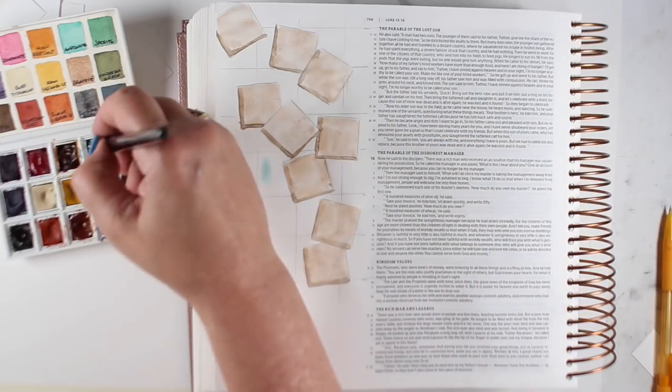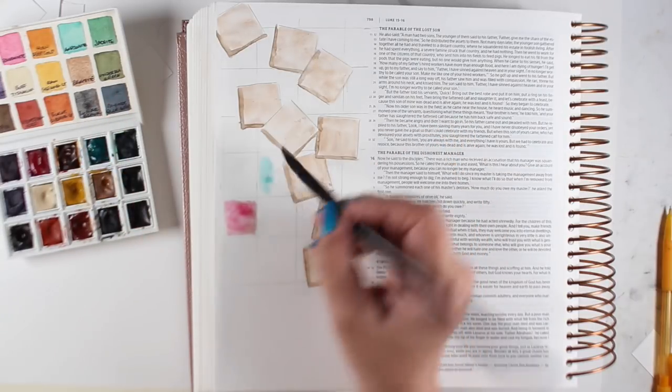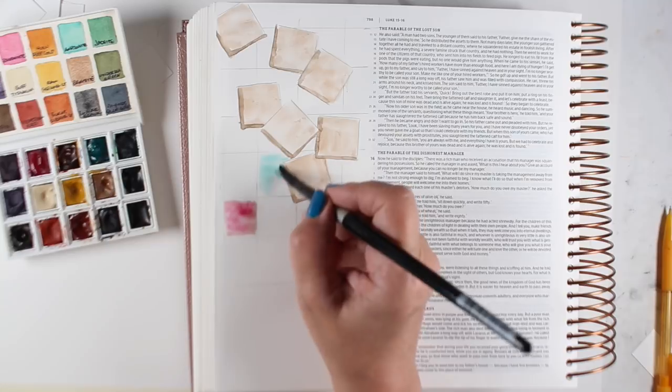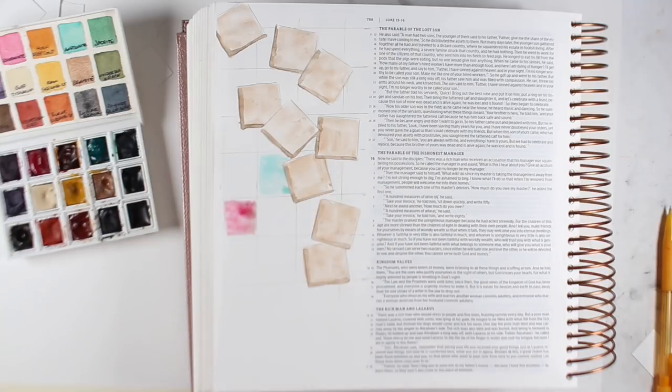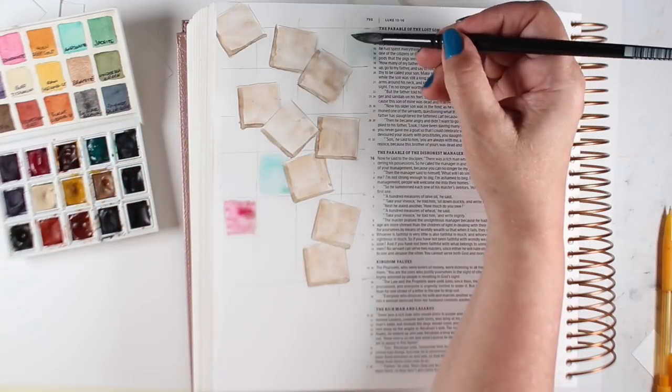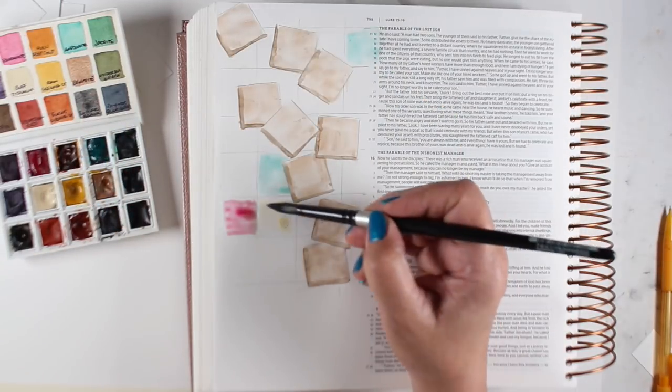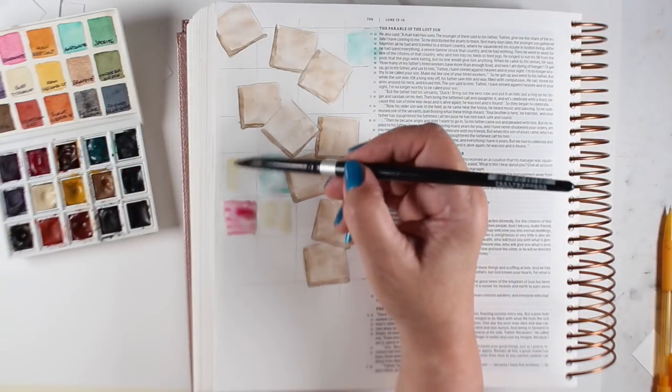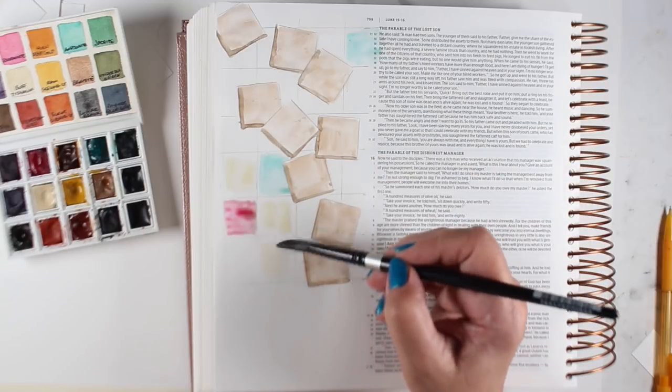And the scrabble boards have usually a couple different squares that have different points on them. And there's some that are pink and blue or pink and teal, different kinds of colors. You can, again, Google, or you can use whatever kind of board you have in your game collection at your house and make one that kind of matches.